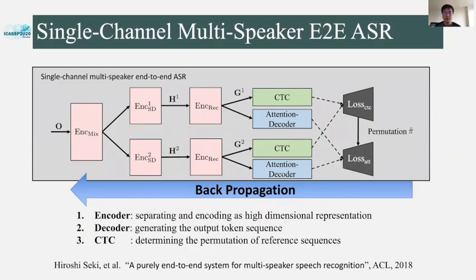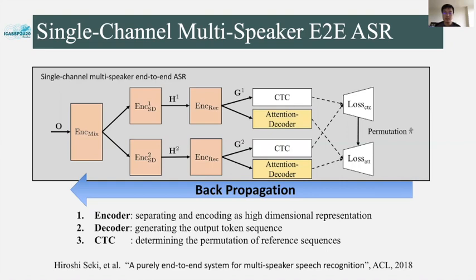Let's recap the single-channel multi-speaker end-to-end ASR model. Similar to the normal end-to-end ASR model for single speaker, it consists of the encoder and decoder. In the encoder, there are three stages. First, the input mixture speech features are mapped to high-dimensional representations with the mixture encoder. Next, several speaker differentiating encoders perform the separation to have representations H. Then, the recognition encoder transforms each separated stream H to new representations G. The attention-based decoder takes these hidden representations G to generate the output token sequences. CTC not only provides decoding information but also determines the order of the reference sequences during training. We can apply the transformer in each encoder module and the decoder module.